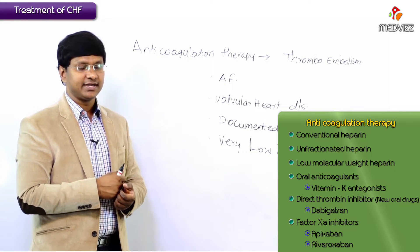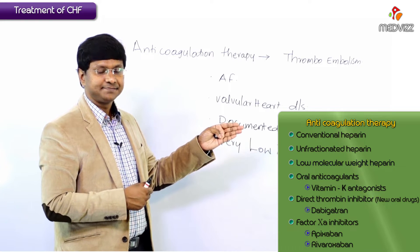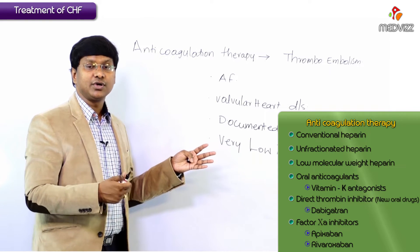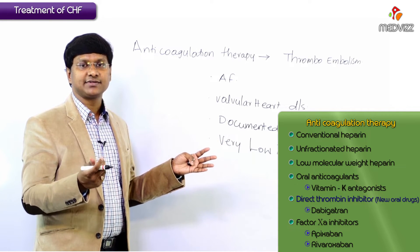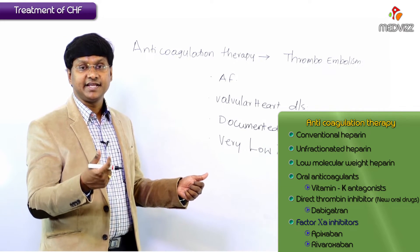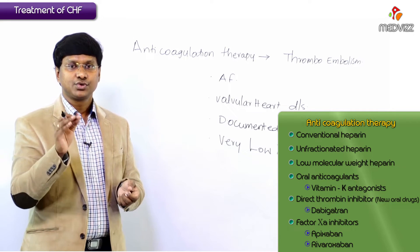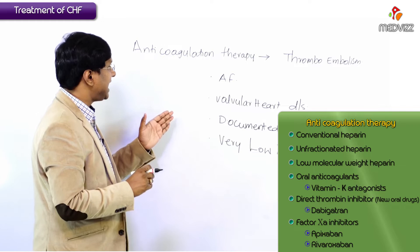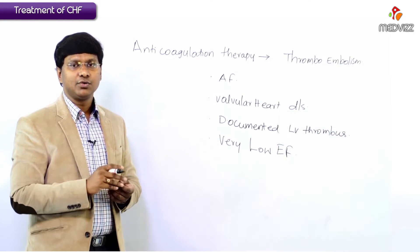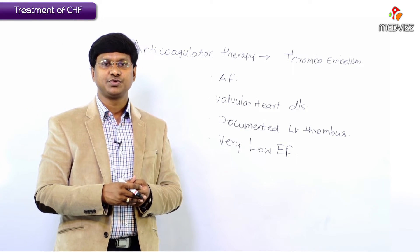To summarize, the anti-coagulants used are conventional unfractionated heparin, low molecular weight heparin, oral anti-coagulants like vitamin K antagonists, and the newer oral anti-coagulants — the direct thrombin inhibitor dabigatran, and the factor Xa inhibitors apixaban and rivaroxaban. These are the anti-coagulation therapies in patients with congestive cardiac failure.